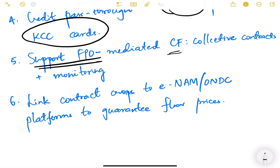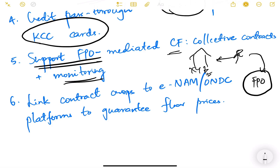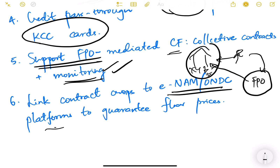Support to Farmer Producer Organizations is very important — FPOs can mediate collective contracts and monitoring. Instead of individual farmers entering contracts directly with companies, they can go through the FPO — a registered society that enters agreements on behalf of farmers, giving more bargaining power. Also important is linking contract crops to the eNAM or ONDC platform to guarantee floor prices so farmers are not exploited.